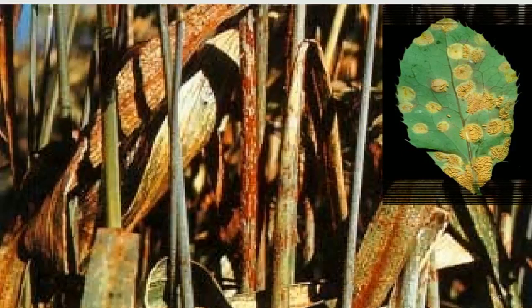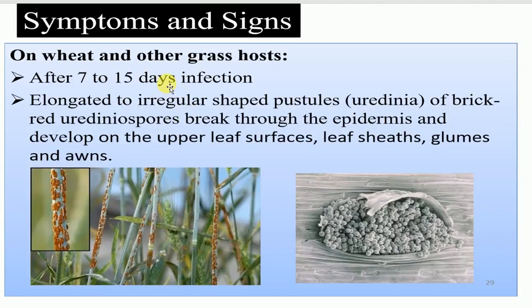Now let's discuss the symptoms and signs of black rust of wheat or cereal rust. On wheat and other grass hosts, this pathogen causes infection after 7 to 15 days. The symptoms and signs of this pathogen are elongated to irregular-shaped pustules, and uredinia of brick-red urediniospores break through the epidermis.